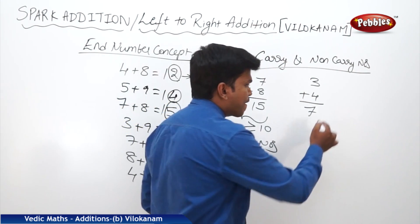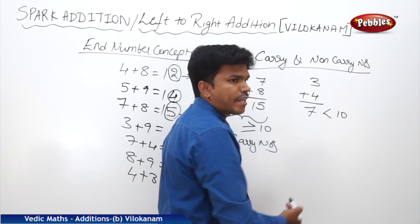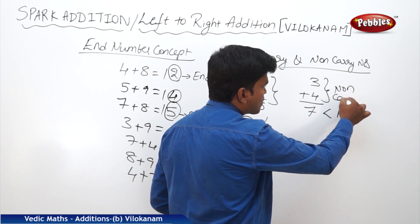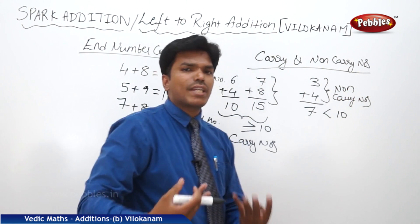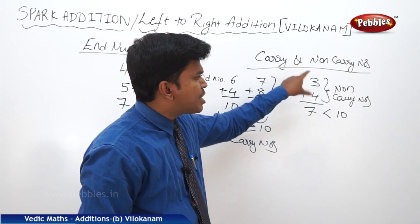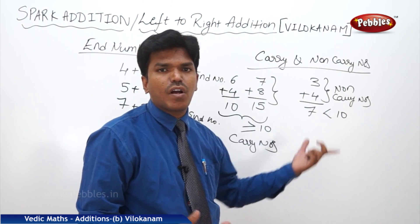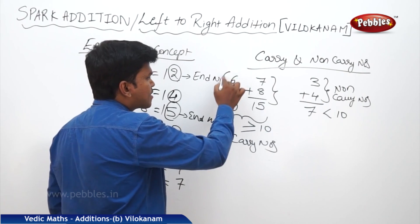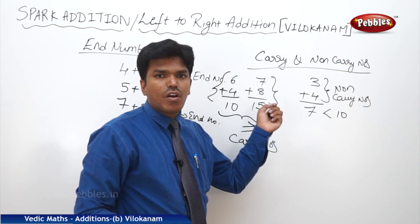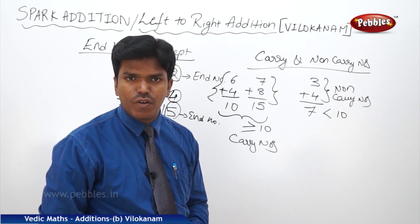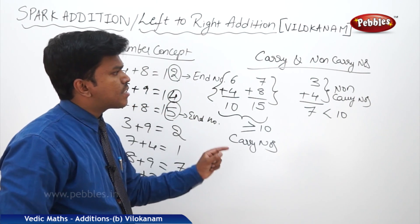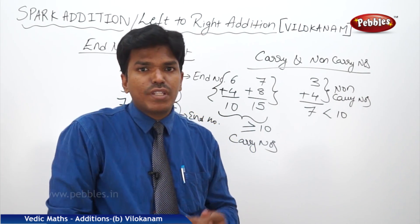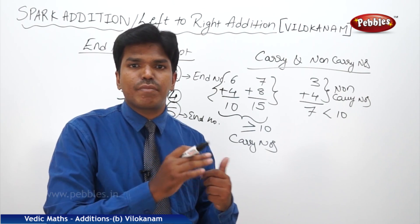If the sum is less than 10, those numbers are called non-carry numbers — they don't generate a carry. Since the other numbers do generate a carry of one, we call them carry numbers. Now let us apply these concepts and go deeper into the method to see how they help us.